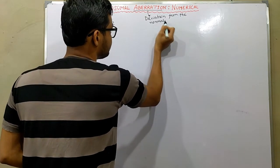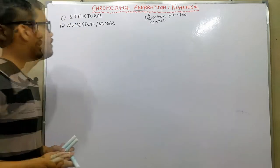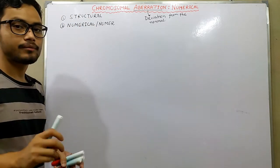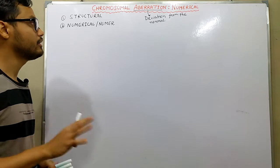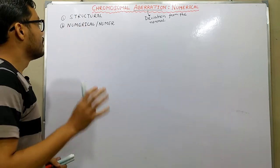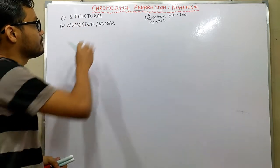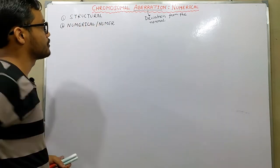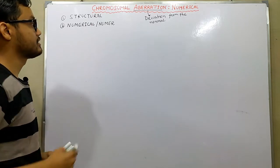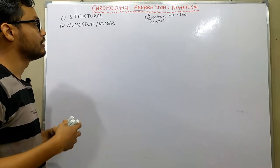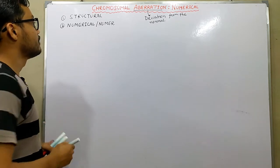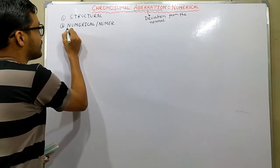In the case of structural aberration, I already covered all of the topics in detail. And in the case of numerical aberration, the number aberration is where the original number varies, and that variation or deviation in number is considered as the numerical aberration.